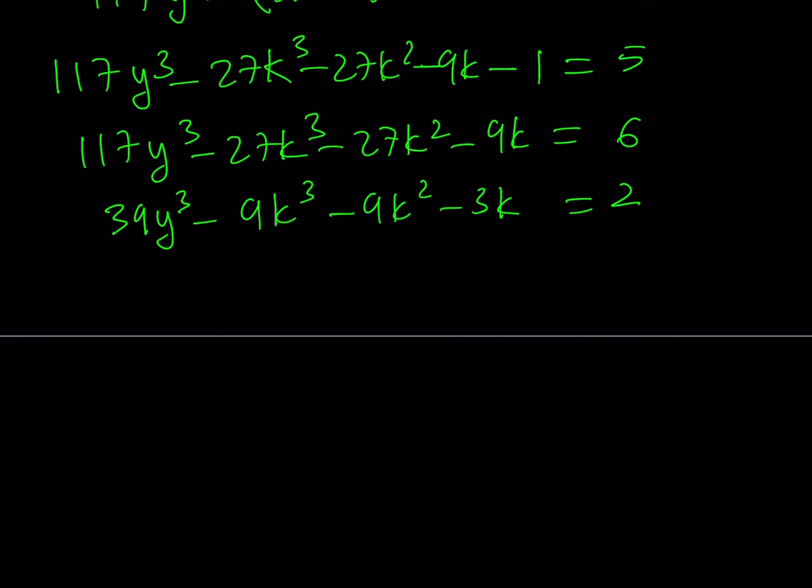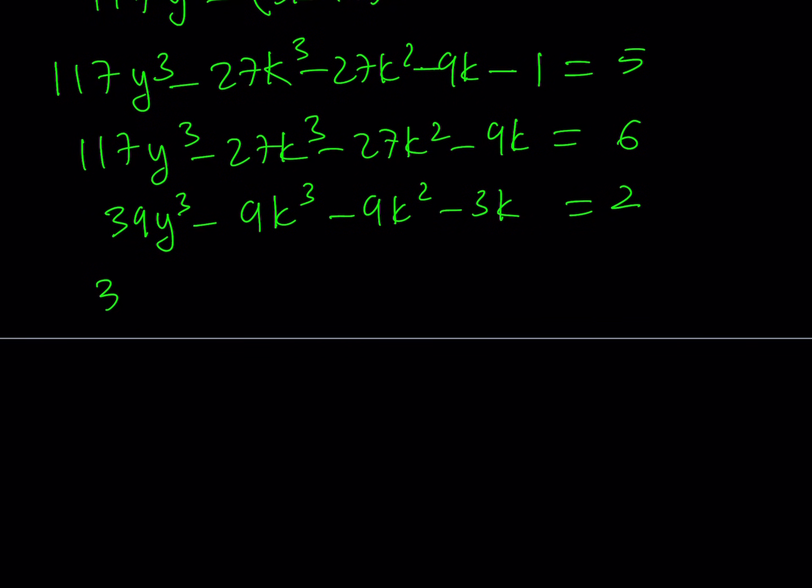At this point, you can use the modular arithmetic arguments. Or, also, you can just take out a 3 here because the left-hand side is still divisible by 3.